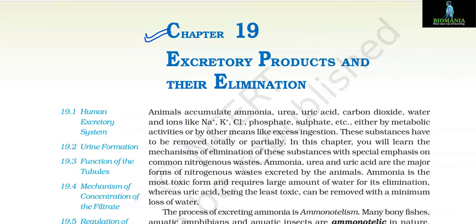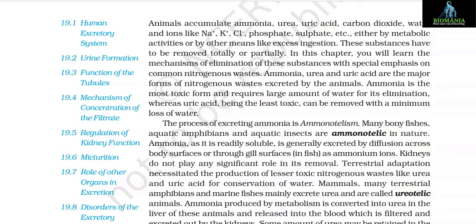Chapter 19: Excretory Products and Their Elimination. Animals accumulate urea, uric acid, carbon dioxide, water, and ions like sodium, potassium, chloride, phosphate, sulfate etc., either by metabolic activities or by other means like excess ingestion. These substances have to be removed totally or partially. In this chapter you will learn the mechanisms of elimination of these substances with special emphasis on common nitrogenous waste.